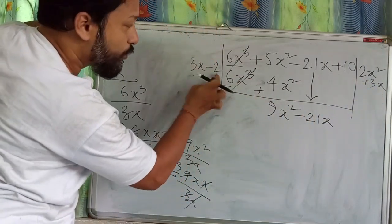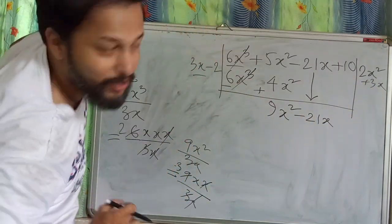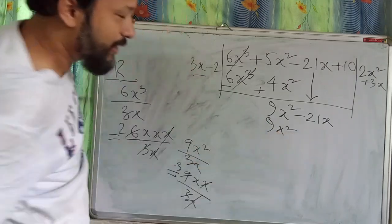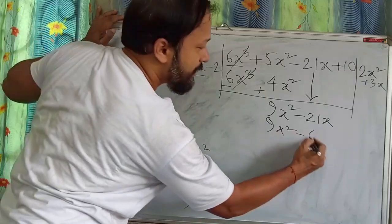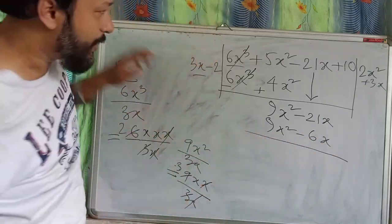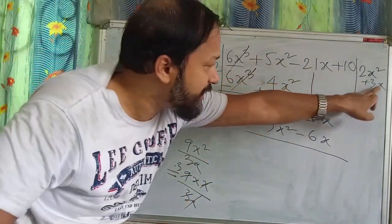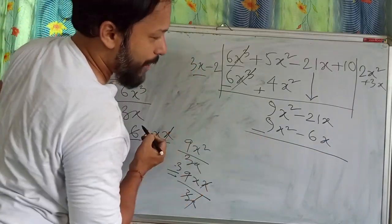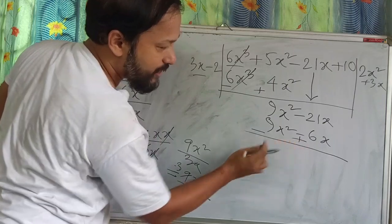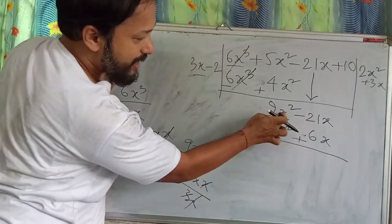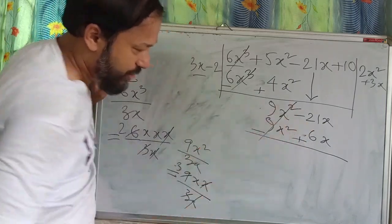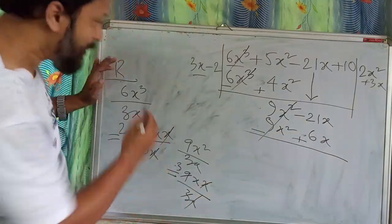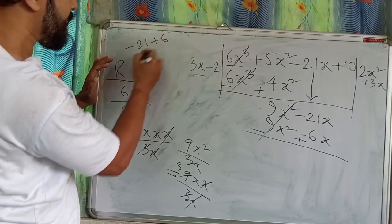By 3x, multiply the divisor: 3x times 3x gives 9x², and 3x times minus 2 gives minus 6x. Change the sign — plus becomes minus, minus becomes plus. So plus 9x² minus 9x² cancels. Then minus 21x plus 6x remains.